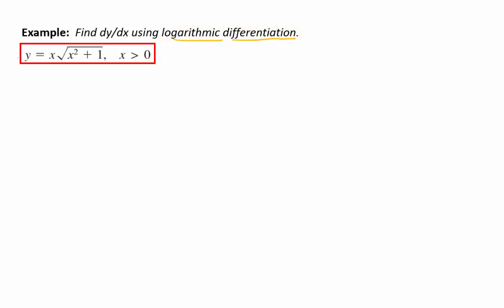For example here, notice that this function has a restricted domain. We're only plugging in x values greater than 0. So if you multiply a positive x times the square root of x squared plus 1, you're going to get positive answers, right? The reason that's important is because you can only take the log of a positive. So this little trick will only work when you have positive functions.